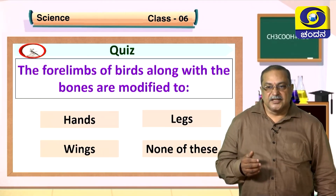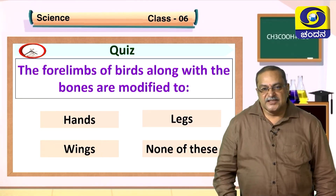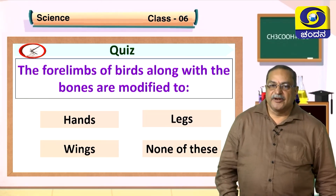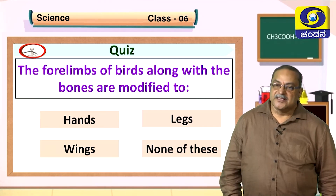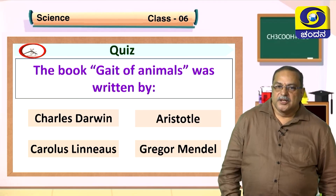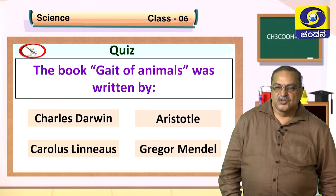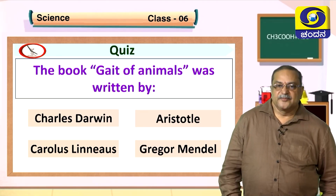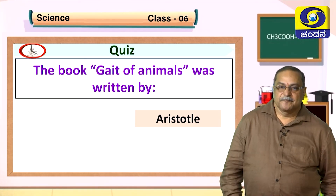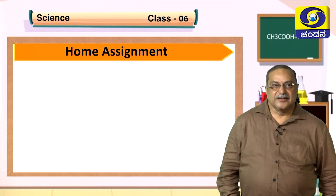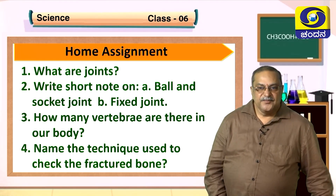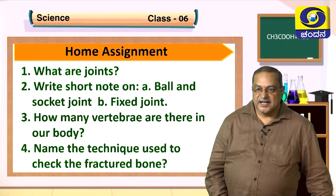Children, it is time for a quiz. Question 1: The forelimbs of birds are modified to form — wings. Question 2: The book 'Gait of Animals' was written by Aristotle. Now it is time for home assignment — note down these questions, answer them on your own, and show your science teacher. Go through the textbook and watch the video lesson again.